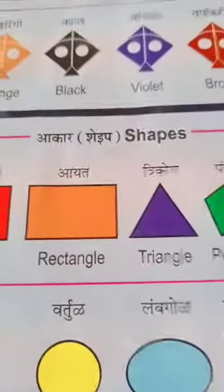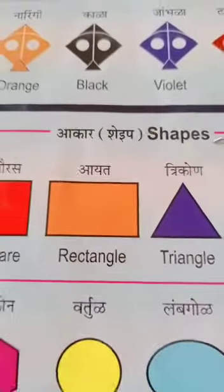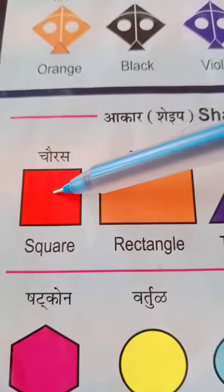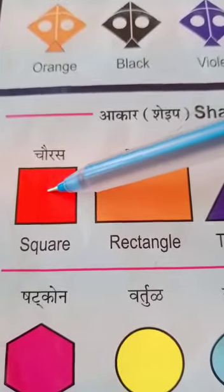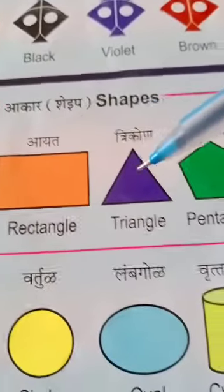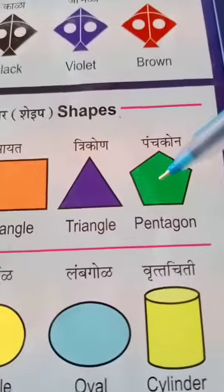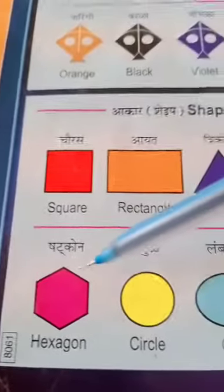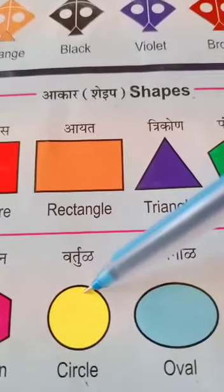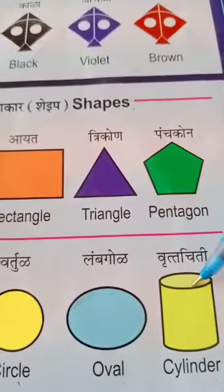Now, revision of shapes. This is the shape of a square. This is rectangle, triangle, pentagon, hexagon, circle, oval, and this is cylinder.